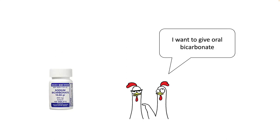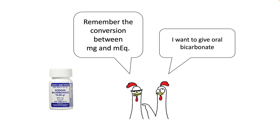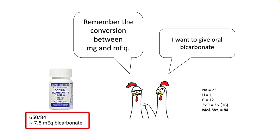If you want to give oral bicarb, convert the milligrams into mEq by dividing by 84, which is the molecular weight of sodium bicarb. So 650 mg of sodium bicarb is approximately equal to 7.5 mEq.